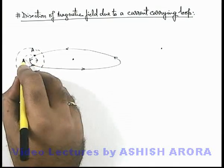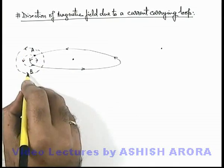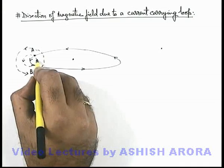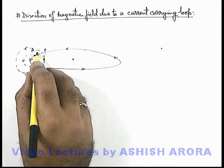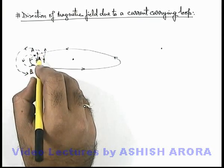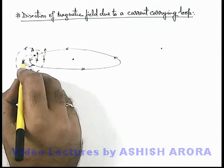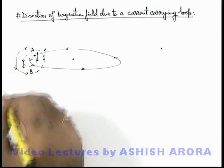So these magnetic lines will exist in this manner. Inside the current carrying loop here we can see that magnetic field will be in upward direction and outside the loop in the plane of loop it is in downward direction.